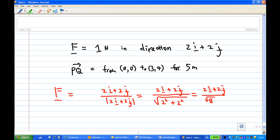Then the displacement PQ is from (0,0) to (3,4). So that is from 0 to 3i, 0 to 4j, and the length of PQ is actually 5 in this case.